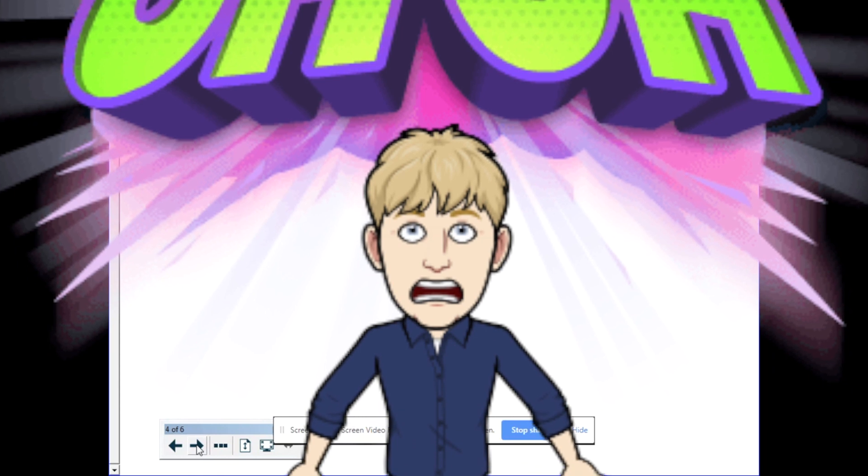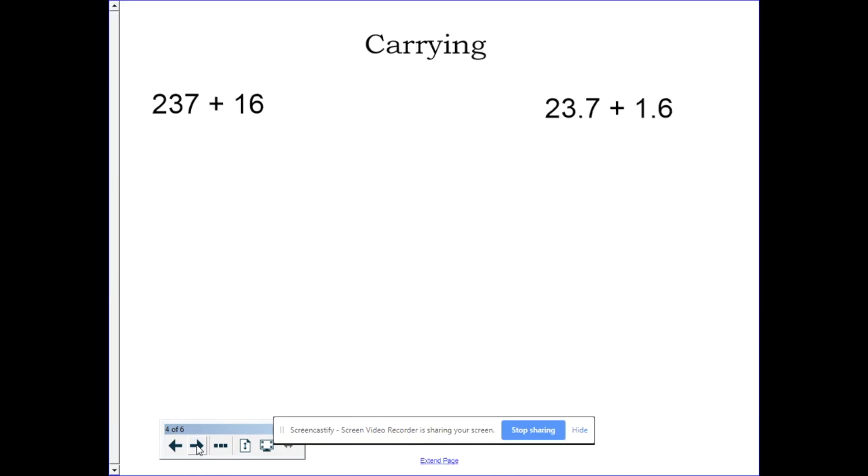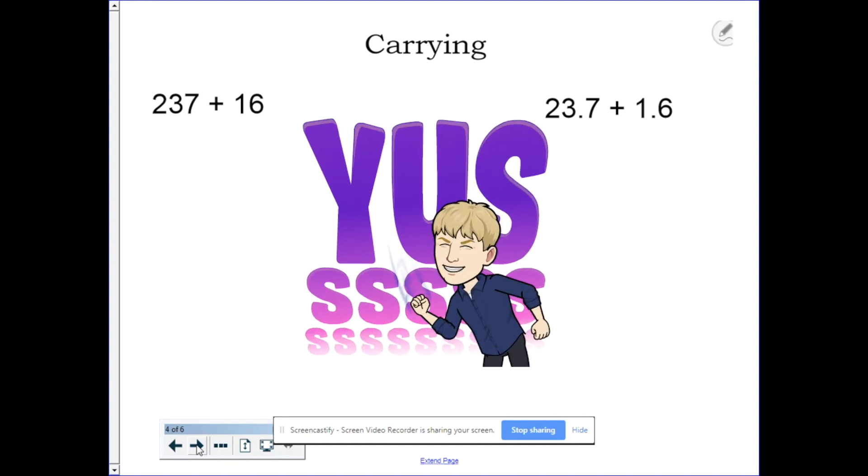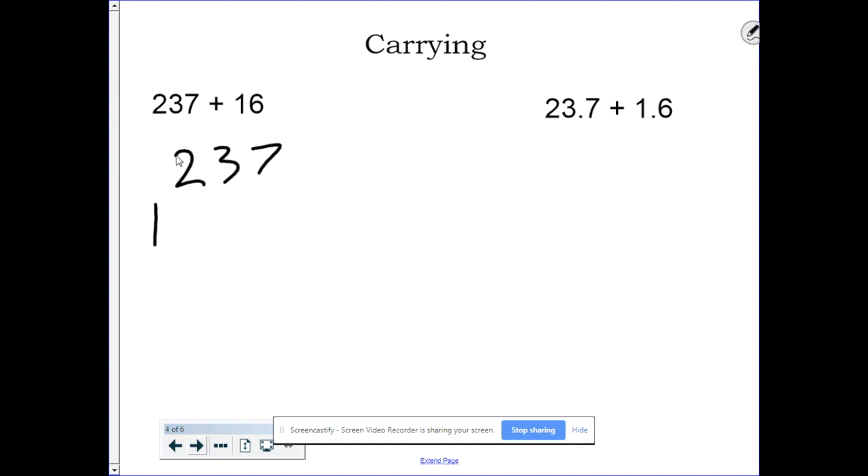But what about carrying and borrowing? The good news is that the way you carry and borrow with decimals is exactly the same as how you carry and borrow with whole numbers. With whole numbers, we'd have 237 plus 16. 7 plus 6 is 13. So I carry the 1 up here because that's one ten. And I have 3 down here. I still have 13.